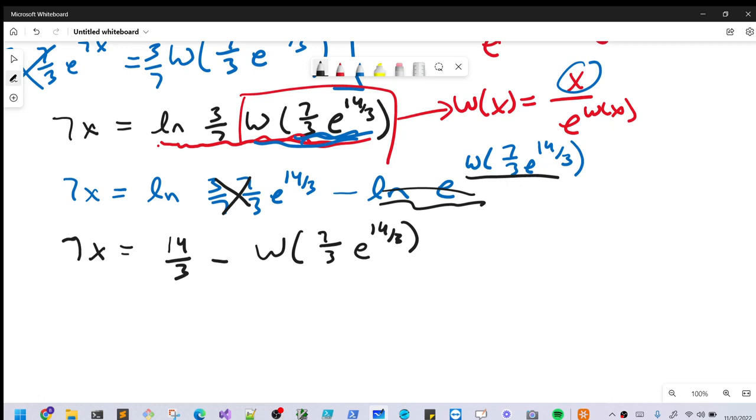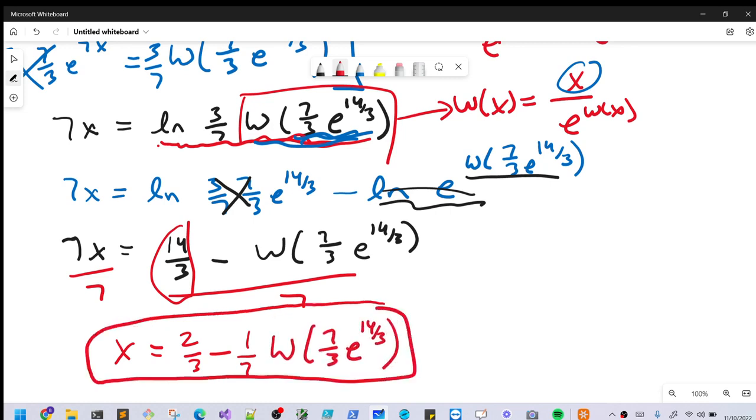And so now we can divide by 7 on both sides. Let's do that. And what we're left with is x equals, so 14 thirds divided by 7 is going to actually be 2 thirds. And then here we can't really do anything to simplify it. So we'll just divide by 7, we'll write it as 1 seventh up front. Lambert W 7 thirds e to the 14 thirds. So it's not really very much, it's not really simplified, but I got rid of the ln. So I kind of like that anyway.